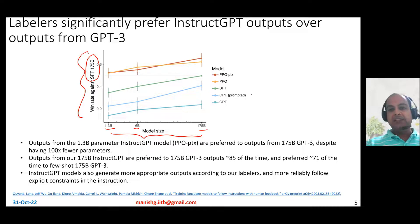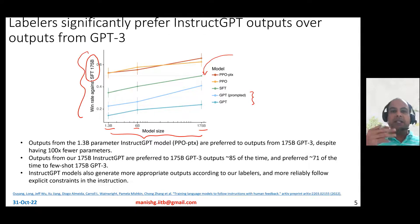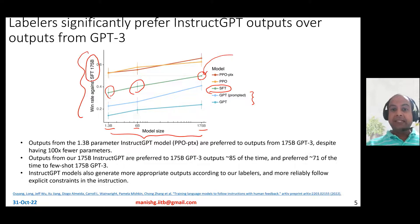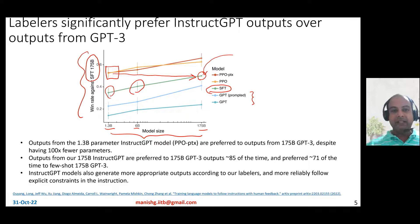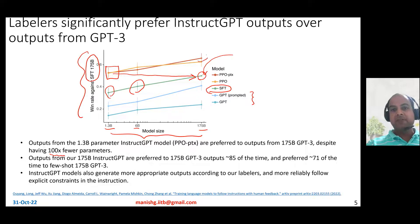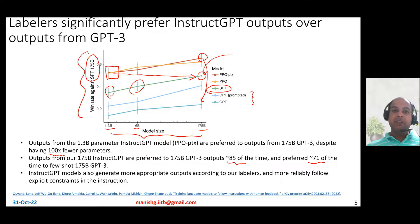A very interesting point to observe is that even a 1.3 billion PPO or PPO-PTX model is better compared to a 175 billion parameter SFT model — that's 100x fewer parameters, yet the model is still better. The 175 billion PPO model is preferred over the 175 billion GPT-3 model around 85% of the time, and preferred around 71% of the time compared to the GPT-3 Prompted model.